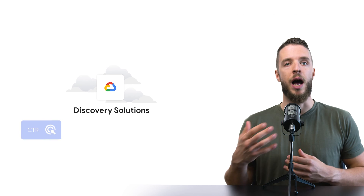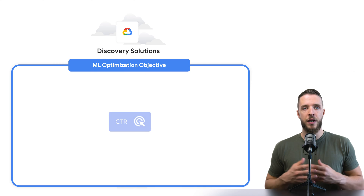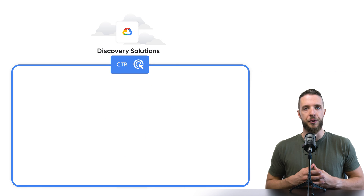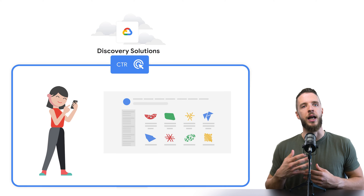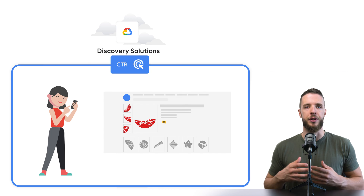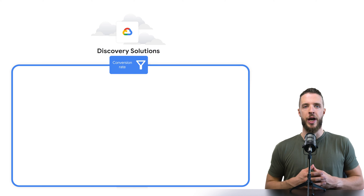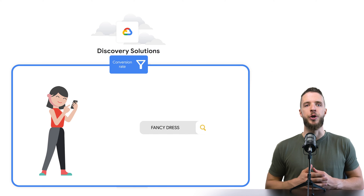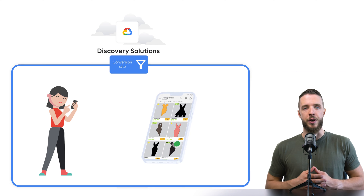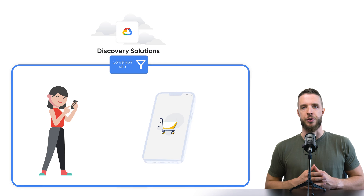Discovery Solutions allow you to optimize AI models for the following objectives. Optimizing for click-through rate emphasizes engagement — you should optimize for click-through rate when you want to maximize the likelihood that the user interacts with the product returned in the recommendation. Optimizing for conversion rate maximizes the total purchase outcomes over all customer sessions. If you want to increase the ratio of conversions per session, optimize for conversion rate.